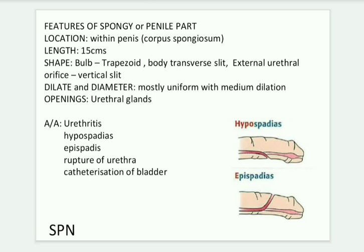Rupture of the urethra can occur beneath the pubis by a fall, or it can be caused by any sharp object. Any sharp object injury can lead to rupture of the urethra.